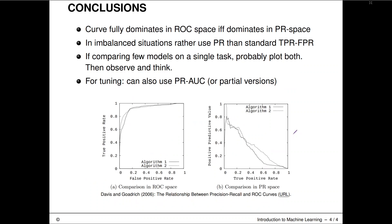Conclusions: A curve that fully dominates another in ROC space does so if and only if it dominates in PR space — curve dominance is compatible between the two spaces. In imbalanced situations, it is usually better to use the PR curve than the standard TPR/FPR ROC curve. For roughly balanced data, use TPR/FPR; for imbalanced data, use PR. That said, if you're comparing just a few models on a single task, why not plot both curves, study them, and think about what you see? If you can identify a problem in one of the two, act accordingly in your model selection and analysis.